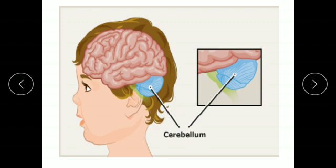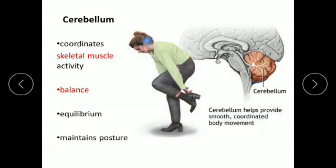Cerebellum is positioned behind and below the cerebrum. It is much smaller in size. It is responsible for maintaining balance in the body and coordinating muscles and their activities. It also helps in maintaining the posture of the body. While decisions are being taken by the cerebrum, it is the responsibility of the cerebellum to ensure they are implemented. For example, if the cerebrum has taken a decision to adjust a shoe, it is the cerebellum that directs the muscles of the hand to relax or contract in order to complete the action.